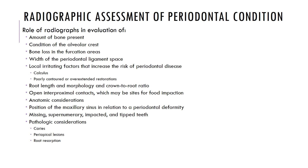Other factors include open interproximal contacts which may be sites for food impaction, anatomic considerations like the position of the maxillary sinus in relation to periodontal deformity, missing, supernumerary, impacted and tipped teeth, as well as pathologic conditions like caries, periapical lesions and root resorption. A radiographic assessment of the periodontium is therefore very important for diagnosis and treatment planning.